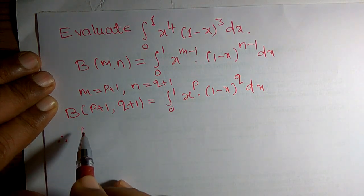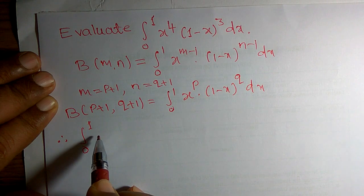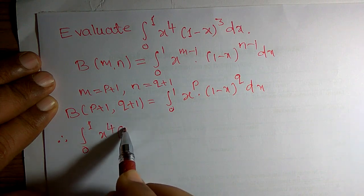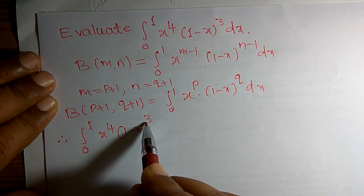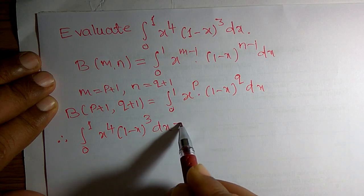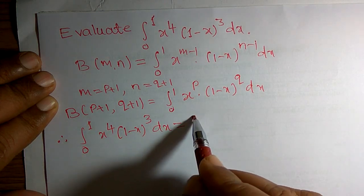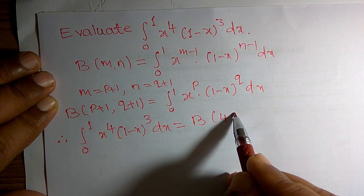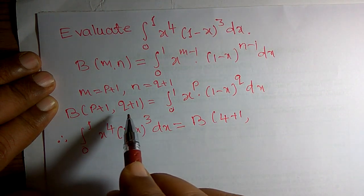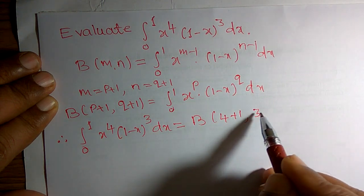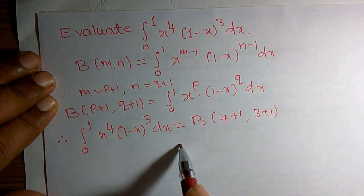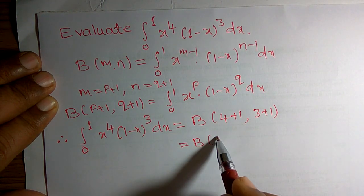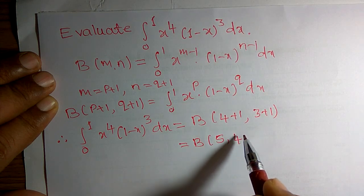the given integration 0 to 1, x to the power 4 into 1 minus x to the power 3 dx, can be written as B of p plus 1, p plus 1 means 4 plus 1, comma q plus 1 means 3 plus 1. Or this can be written as B of 5 comma 4.